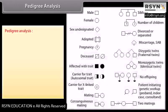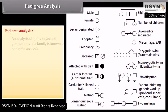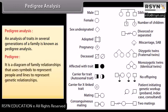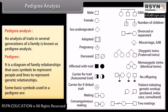Pedigree Analysis. An analysis of traits in several generations of a family is known as pedigree analysis. A pedigree is a diagram of family relationships that uses symbols to represent people and lines to represent genetic relationships. Some basic symbols used in a pedigree are shown here.